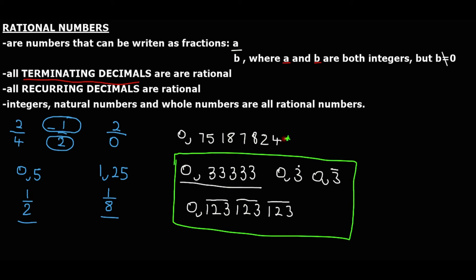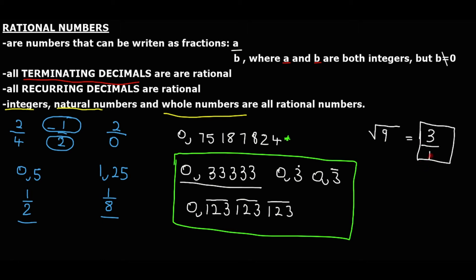A decimal that is neither terminating nor recurring is not a rational number. For example, the square root of 9 equals 3, which is an integer, so it is rational because 3 can be written as 3 over 1. All integers, natural numbers, and whole numbers are rational numbers because any integer can be written as itself over 1.